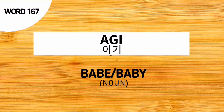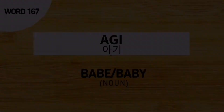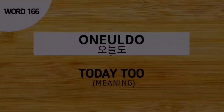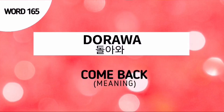Word number 167 is Aagi — the Korean noun for a baby or a young human. Word number 166 is Onoldo, which means 'Today too.' And the last for our review is word number 165, Torawa, which means 'Come back.'